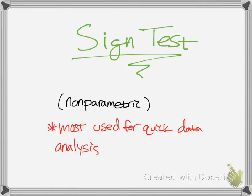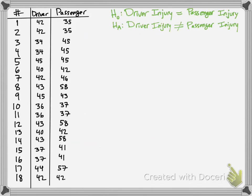Hello, YouTube. Today we're going to be talking about the sign test in statistics. This is a nonparametric test and it's mostly used for quick data analysis — if you want to just check real quick whether there is a difference between the two things studied in the data. So I'm just going to provide a quick example.